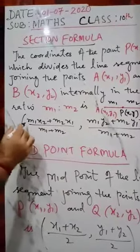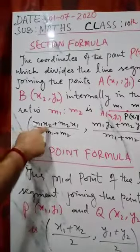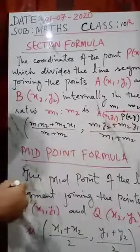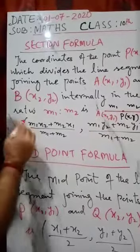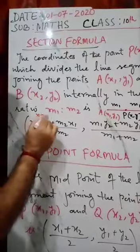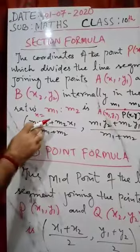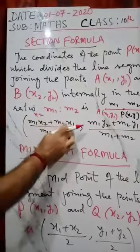The formula is: to find the value of x, the formula is x equals m1x2 plus m2x1 upon m1 plus m2.